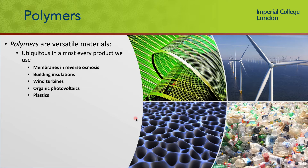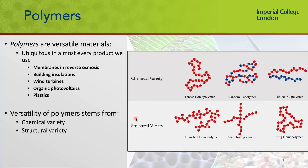Polymers are versatile materials. They're ubiquitous in almost every product we use and they will be useful in the future as we are making technological advances. What's really interesting about polymers stems from the chemical variety and the structural variety. The chemical variety is due to the arrangements of the different monomers that constitute a polymer, and structural variety comes from the way that they're arranged as well.